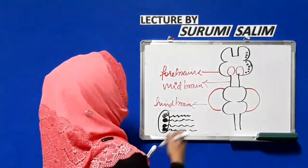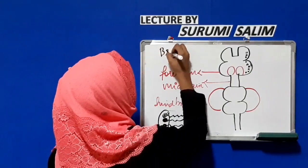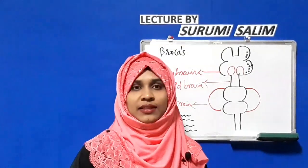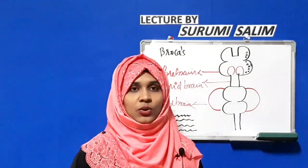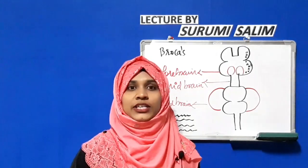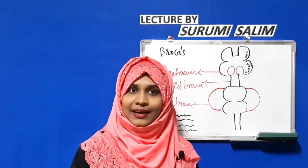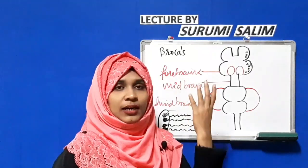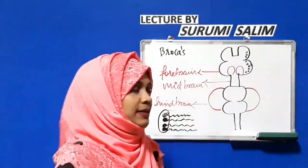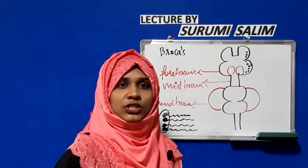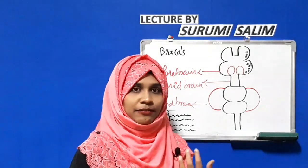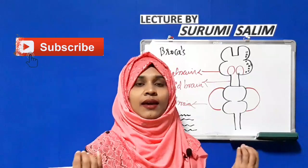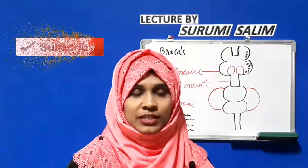There is a particular area in the frontal lobe called Broca's area. Broca's area helps in the production of speech — the expressive language — with the help of the tongue and lips. This is an important and commonly asked question in nursing exams. Major functions of the frontal lobe include Broca's area for speech, abstract thinking, concentration, and judgmental power.